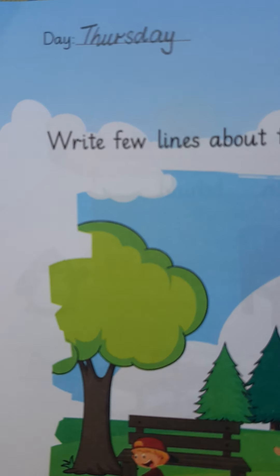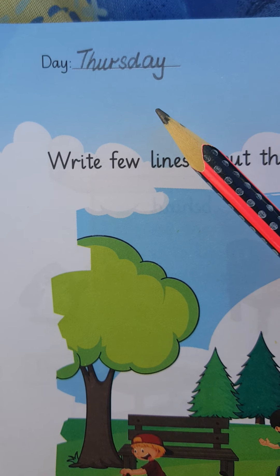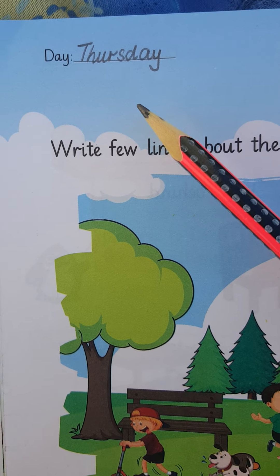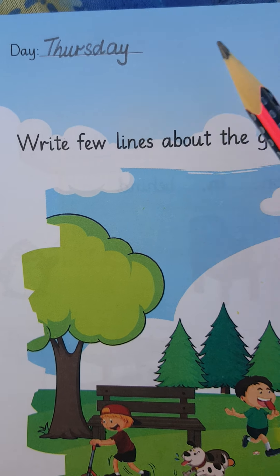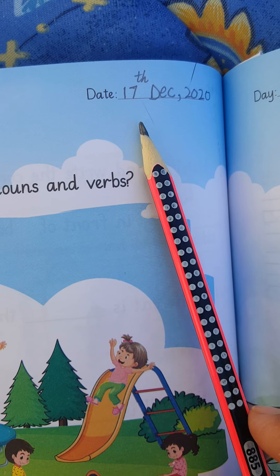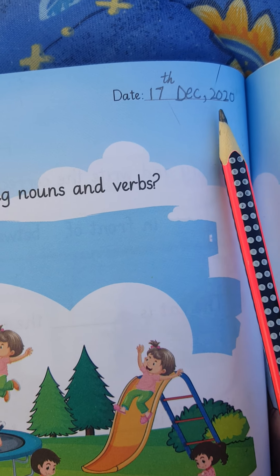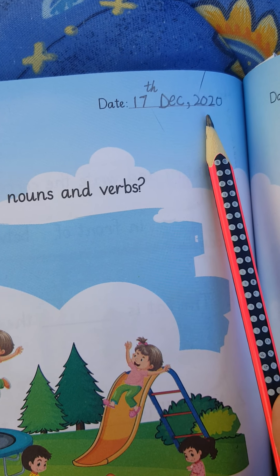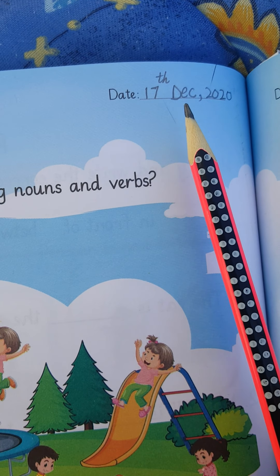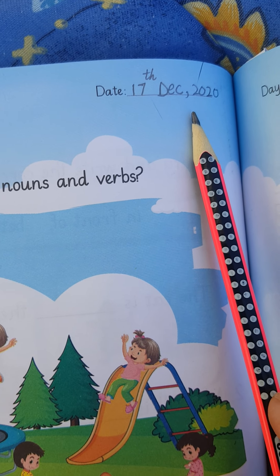First you have to mention the day. What day is today? Today is Thursday. After that you have to mention the date, and today is 17th of December 2020.